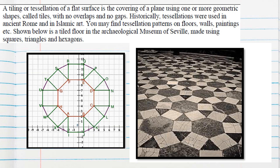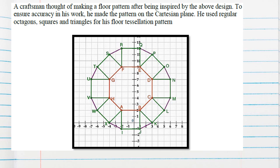Hello students, I'm back with one case study question again from sample paper 2022-23 from maths standard. The question is about tiling or tessellation of a flat surface — the covering of a plane using one or more geometric shapes called tiles. The pattern is on the Cartesian plane and regular octagons, squares and triangles have been used for this purpose.